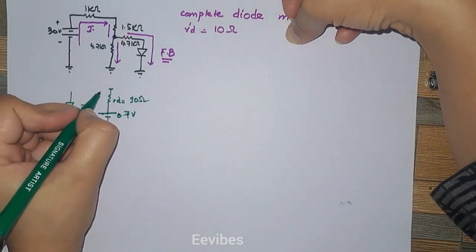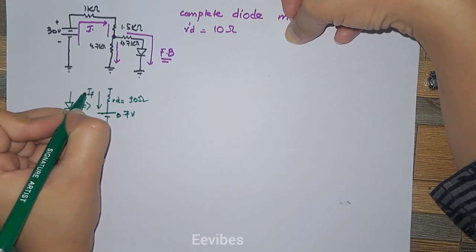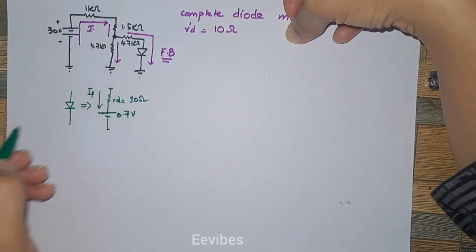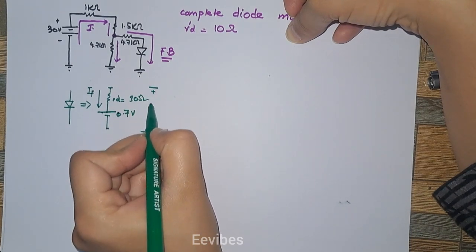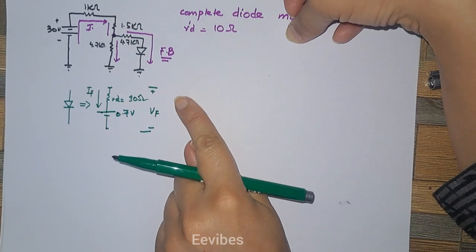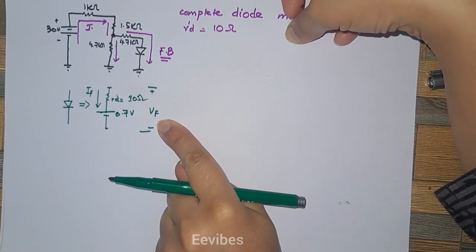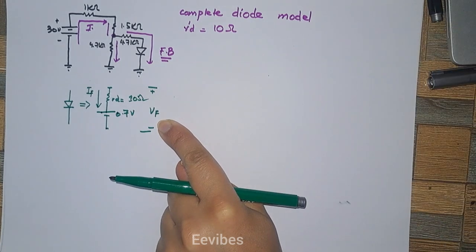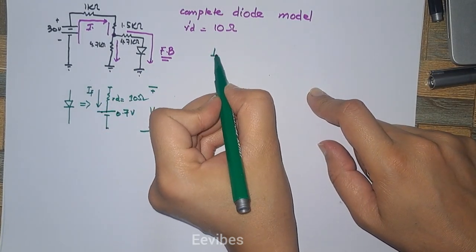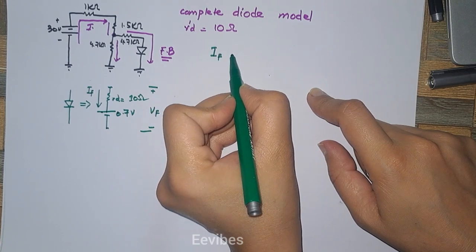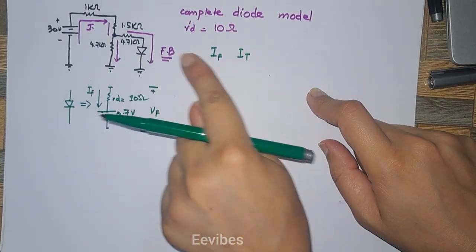If we know the current flowing through this resistor — marking it as IF — we will be able to determine the overall voltage across the diode, represented as VF. So the first task is to determine IF, the total current of the circuitry.